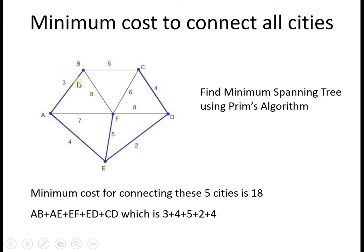For Prim's algorithm, you must know the starting vertex. Then you have to select the edge from the starting vertex to all other vertices with minimum cost. Here you get edges A-B (3), A-D (4), A-E (5), E-D (2), and D-F (4). So all the offices are connected through the telephone cable with a minimum cost of 3, 4, 5, 2 and 4, which gives a total of 80.